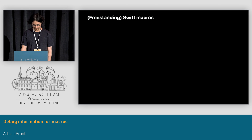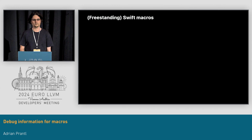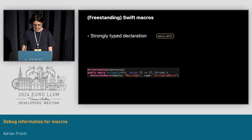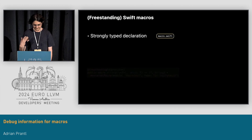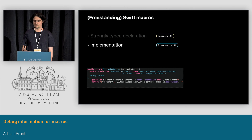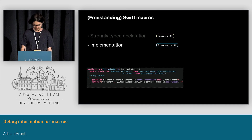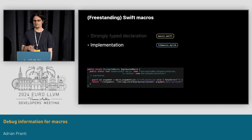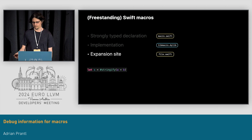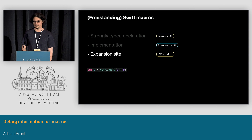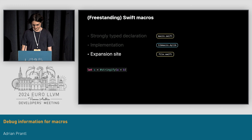Now let's switch gears and talk about Swift macros. A freestanding Swift macro — the kind of macro that looks most like a C preprocessor macro — consists of three parts. There is a strongly typed declaration that tells the type checker where and with what parameters it's legal to invoke that macro in the source code, and this is what guarantees the type safety of Swift macros. Then there's the implementation, which is usually done in Swift itself using libSwiftSyntax, and that implementation is compiled into a separate dylib or executable that is run by the compiler at compile time to expand the macro. Finally, there is the macro expansion site, which is how a macro is used in the source code. Macro expansions are marked with the hash character, so they're easily identifiable from looking at source code.